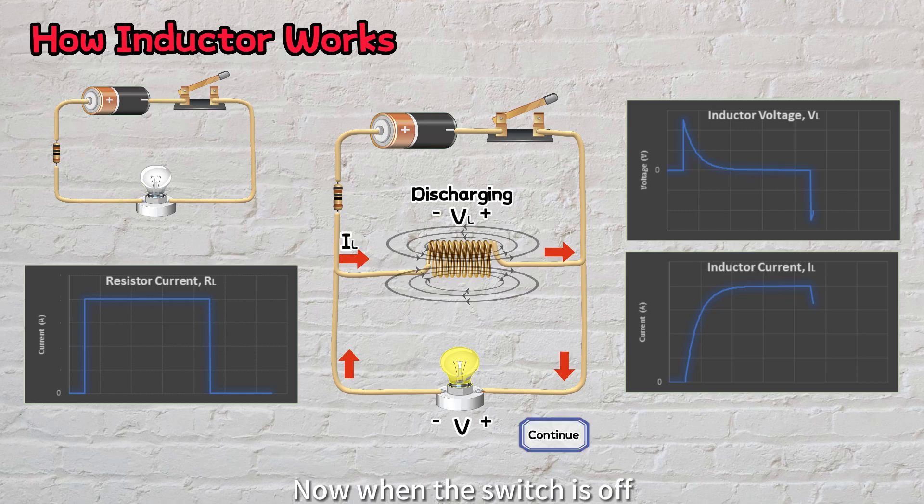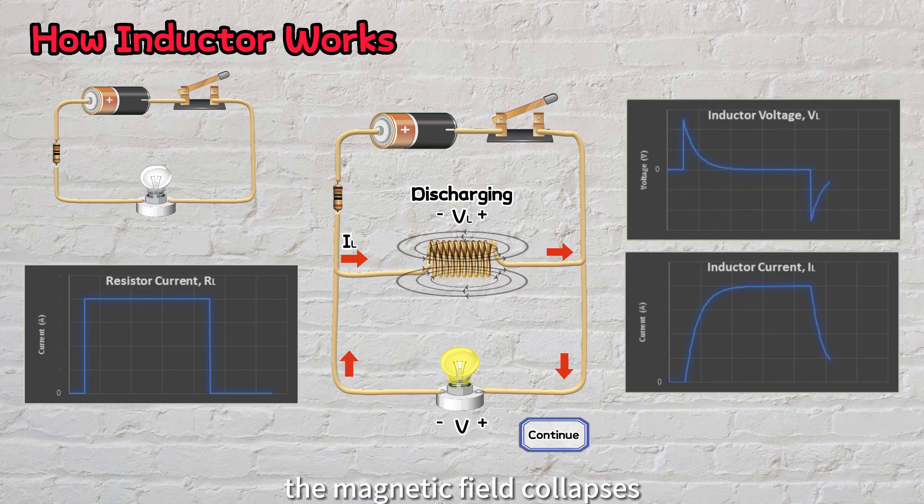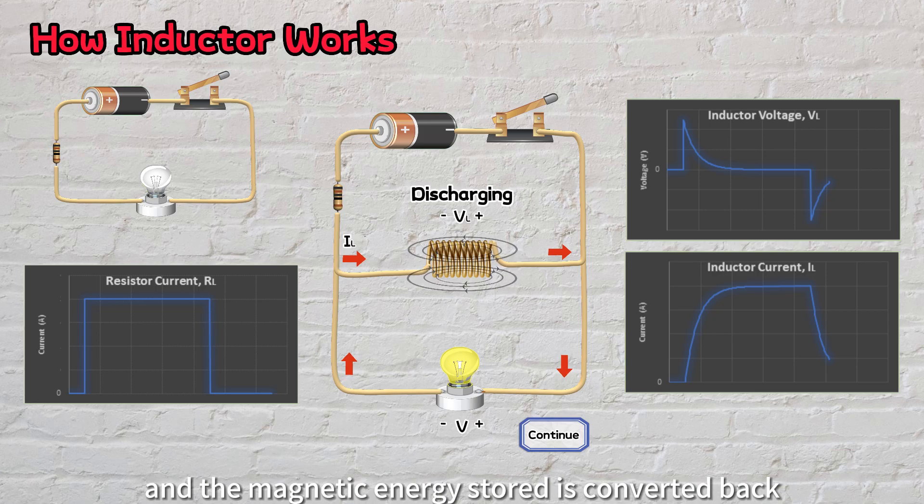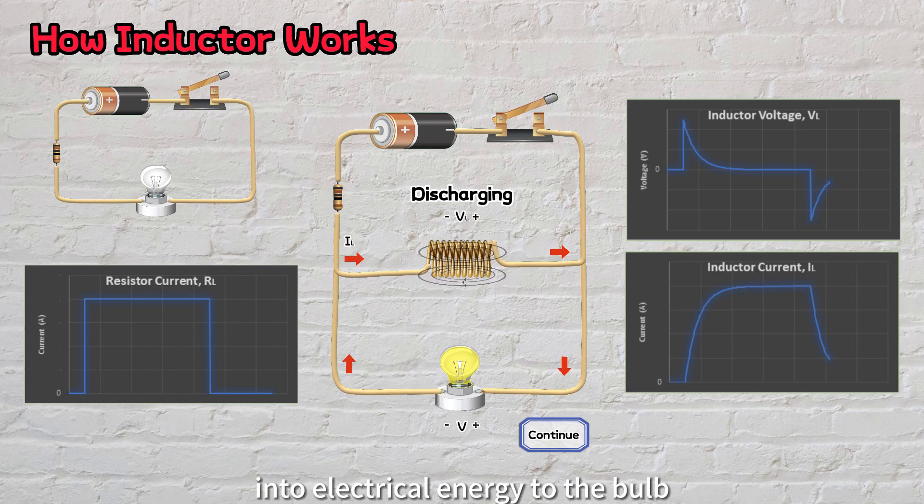Now, when the switch is off, the magnetic field collapses, and the magnetic energy stored is converted back into electrical energy to the bulb.